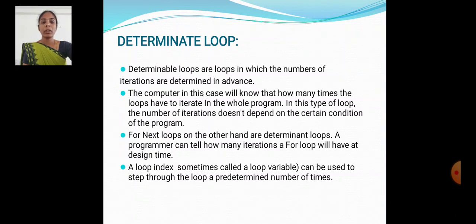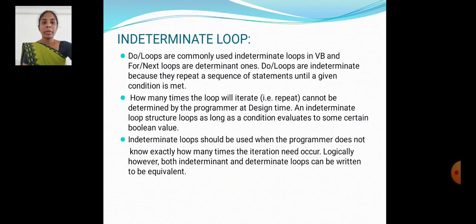For Next loops are determinate loops. A programmer can tell how many iterations a For loop will have at design time. A loop index, sometimes called a loop variable, can be used to step through the loop a predetermined number of times in a determinate loop.